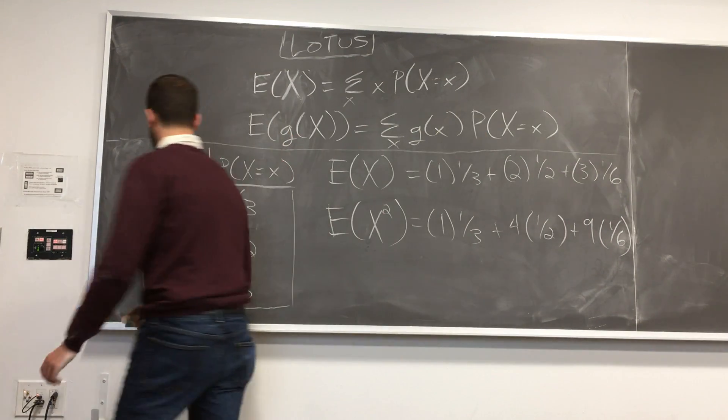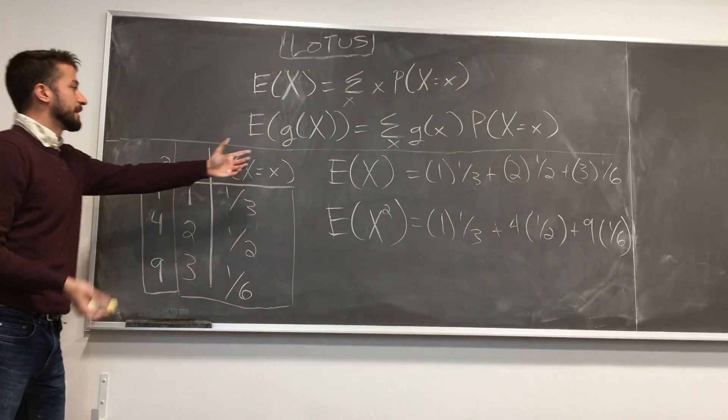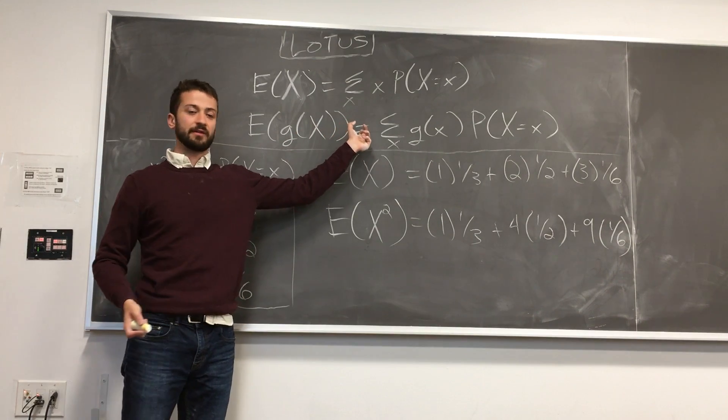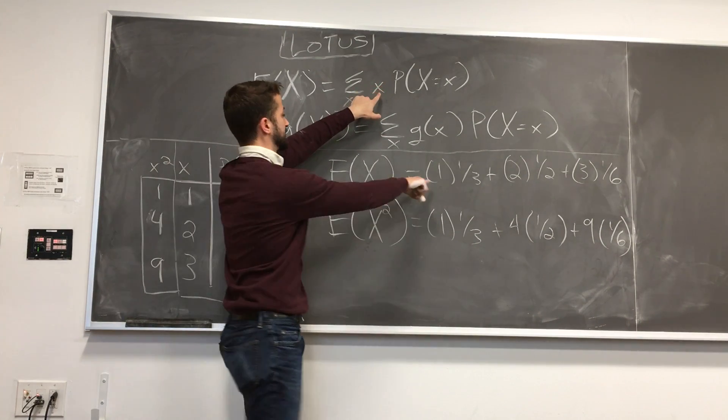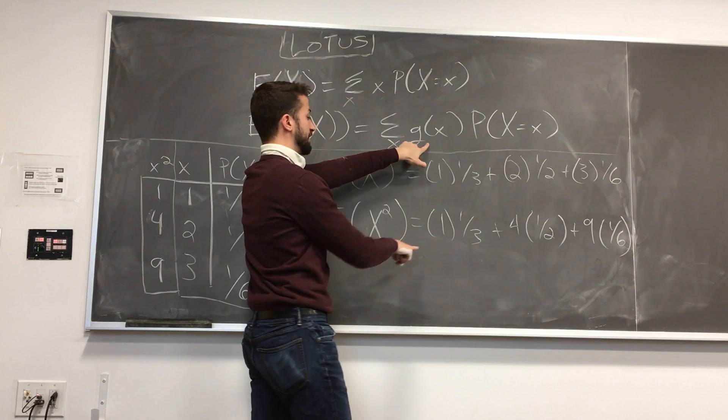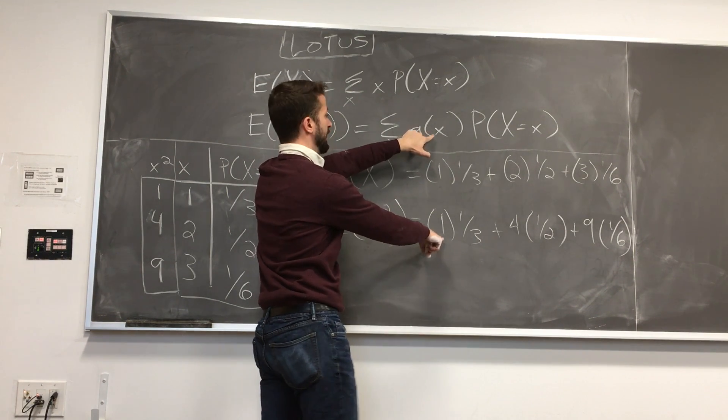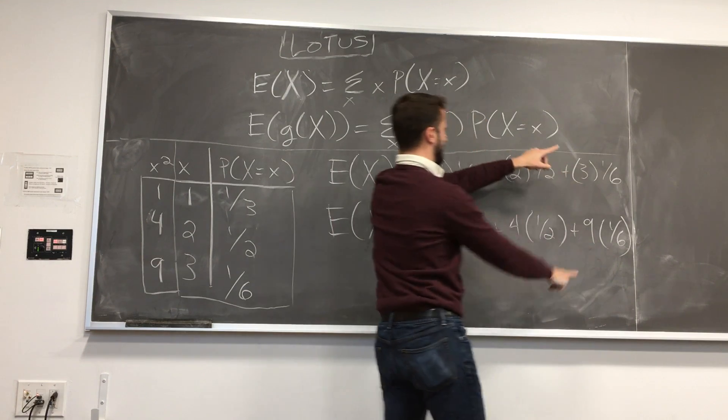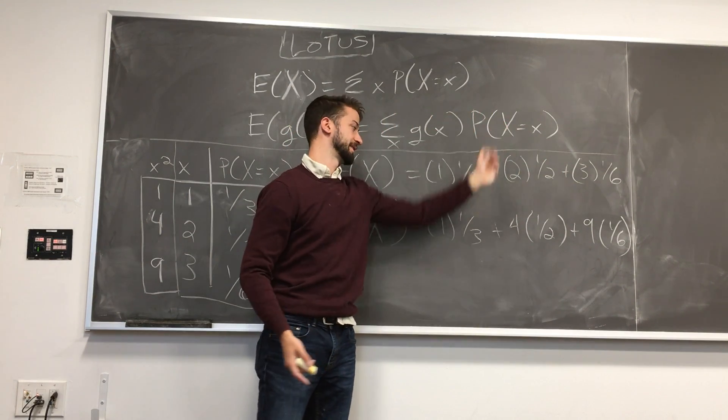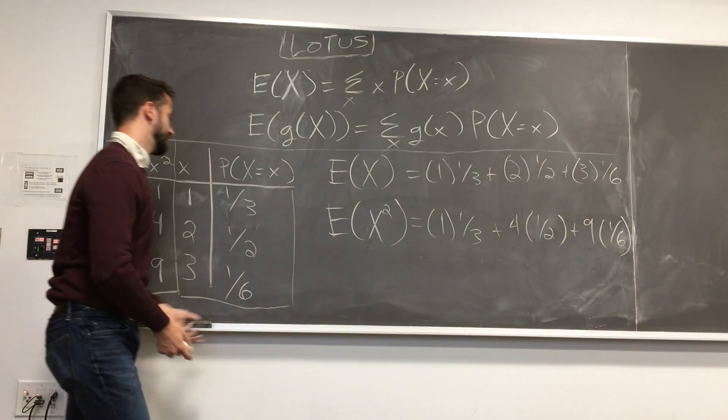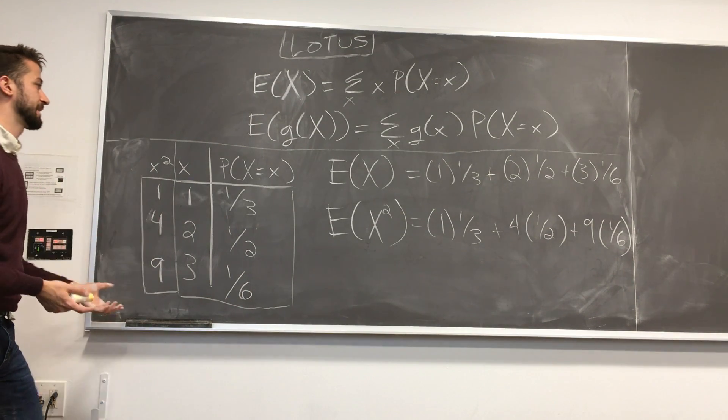Right? That's intuitive. And if you look at it, it matches this equation, right? Instead of just having x, so 1, 2, and 3, we have g of x, where your g is the square. The function g is the square. So, we have 1 squared plus 2 squared plus 3 squared. And then the probability that x takes on all those values. So, once you actually break it down in a simple case like this,